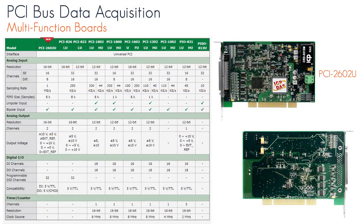Some of the PCI multi-function board features are 16 SE / 8 differential analog inputs with 8192 samples FIFO, 16-bit ADC with max 1ms sampling rate, and analog digital external trigger.